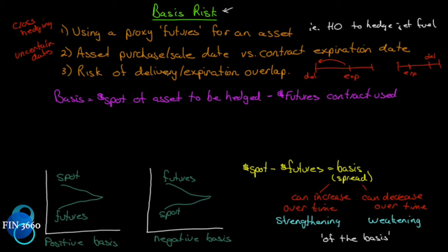Now that we have a picture of where basis risk comes from, we can see clearly that unless the futures contract's underlying asset is the same as the asset you're using, and unless you close your hedge on the very day you take delivery — which just happens to be the contract expiration date — you're going to have basis risk. So you've got to learn how to deal with it. The basis itself is the spot price of the asset to be hedged minus the futures price of the contract used.